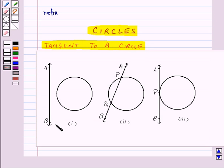Here we have drawn three figures. In the first case, the line AB does not intersect the circle at all. So that means AB is a non-intersecting line with respect to the circle.